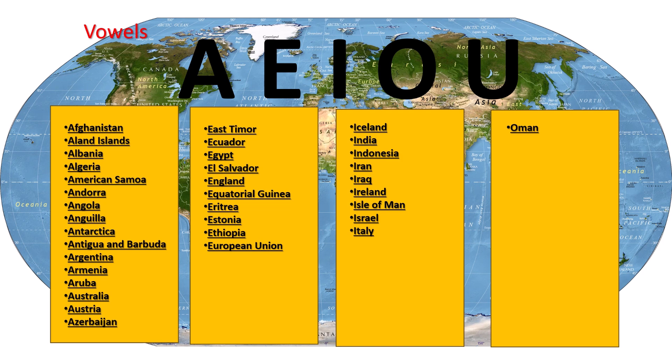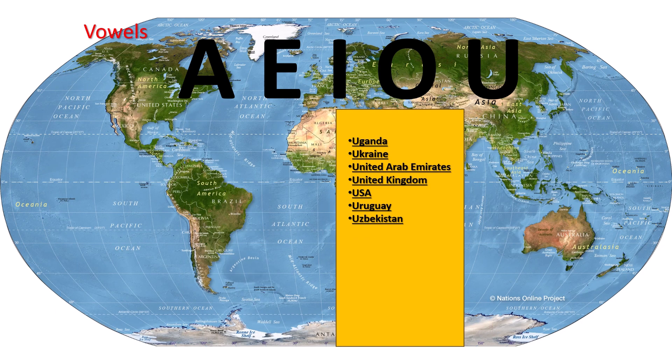With O, the only country is Oman. Next up with U, we've got Uganda, Ukraine, United Arab Emirates, United Kingdom, USA, Uruguay, and Uzbekistan.